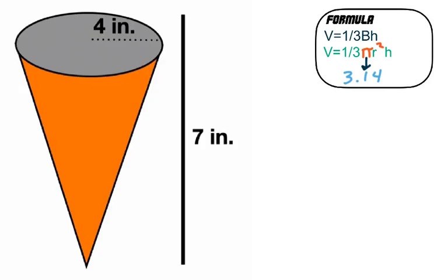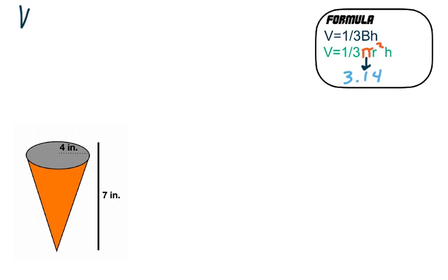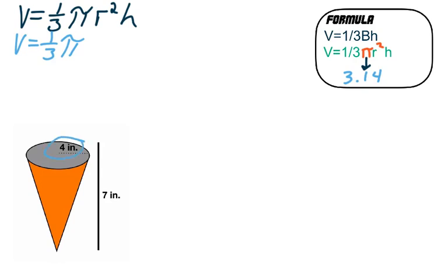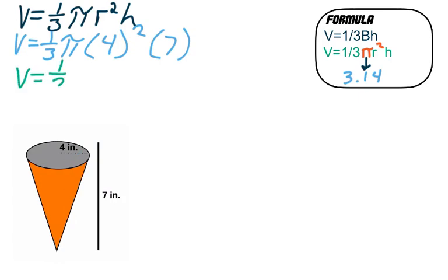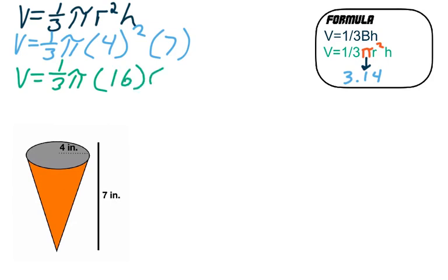Let's try this tricky one — we're going to do some estimating. We've got the cone turned the other direction now. We have a height and a radius. Let's fill in what we have. Volume equals one-third π r squared times the height. The radius is right here — remember, the radius is halfway across. We've got it: it's four. Squared, and then times the height, which is seven.